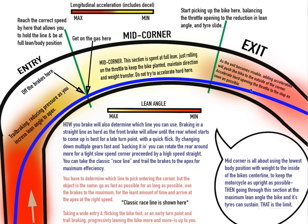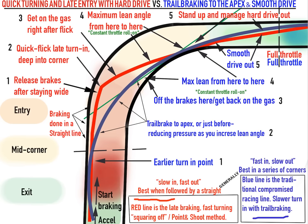There are different ways to drive out. It can be a smooth progressive roll-on where you reach wide open throttle here, or maybe you're more aggressive, keeping a real tight line and on the gas hard. No matter what, you have to manage your reduction in lean angle with your application of throttle. The idea is to get to wide open throttle as fast as possible — if you're comfortable sliding that's one way; if not, you have to go for a progressive smooth application. Now here are two different schools of thought: quick turning and late entry with hard drive line, versus trail braking to the apex and smooth drive.